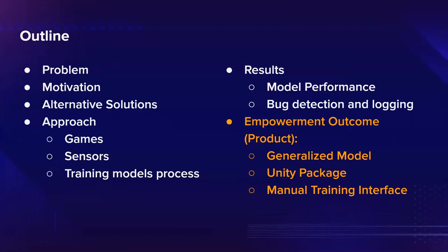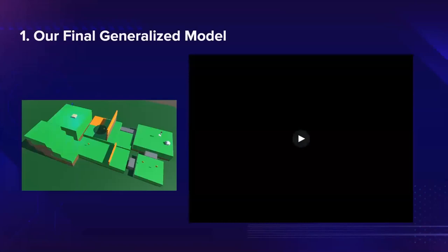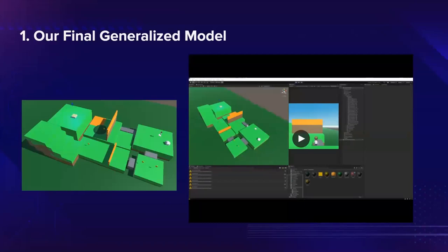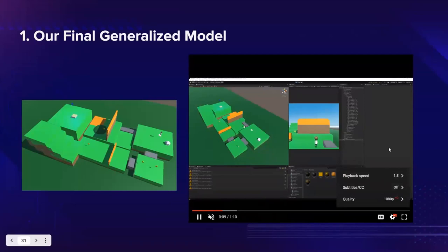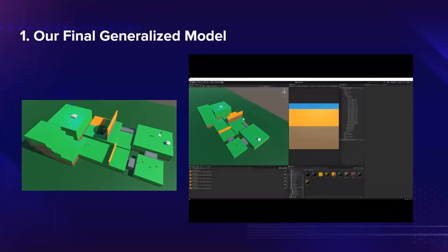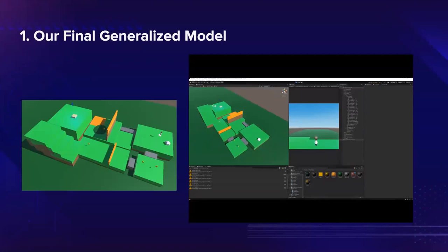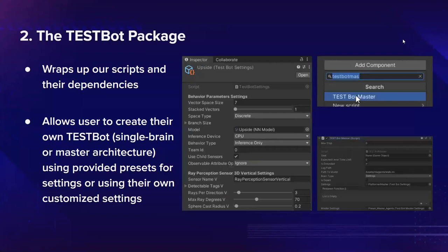Let's talk about our empowerment outcome and the product we are aiming to ship. There are three parts to our product. The first is the generalized model — the master brain — which will be shipped with our product so any developer can use it out of the box to test their game without going through the training process. We tested this model on the blind game, which has a relatively complicated level including a bouncing trampoline — a new mechanic the model had never seen before. As you can see in the video, it's actually using the trampoline to beat the level, demonstrating that it generalized relatively well. It's also able to beat the level by simply climbing up the stairs, showing it can explore the space and find different ways to complete levels.